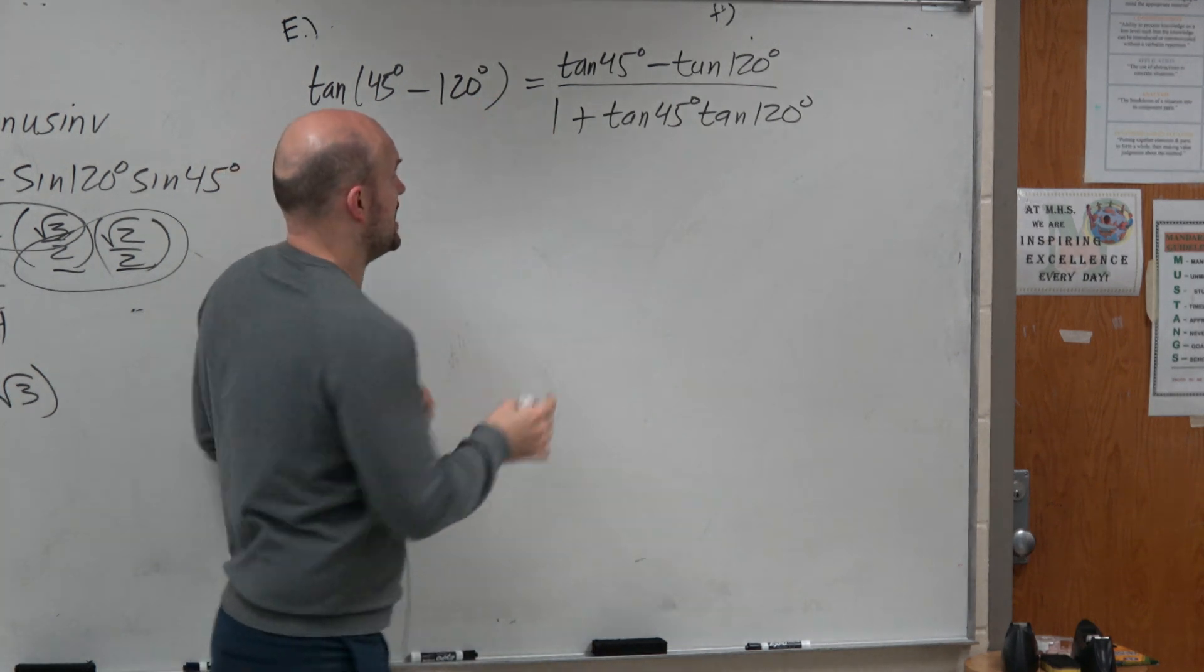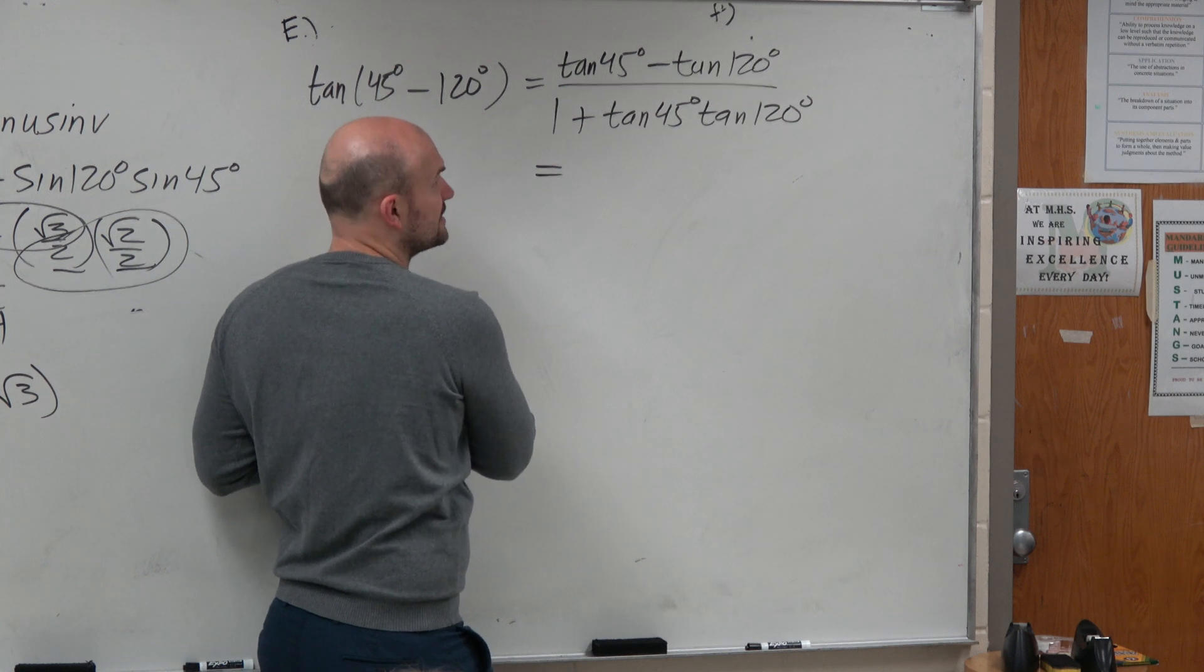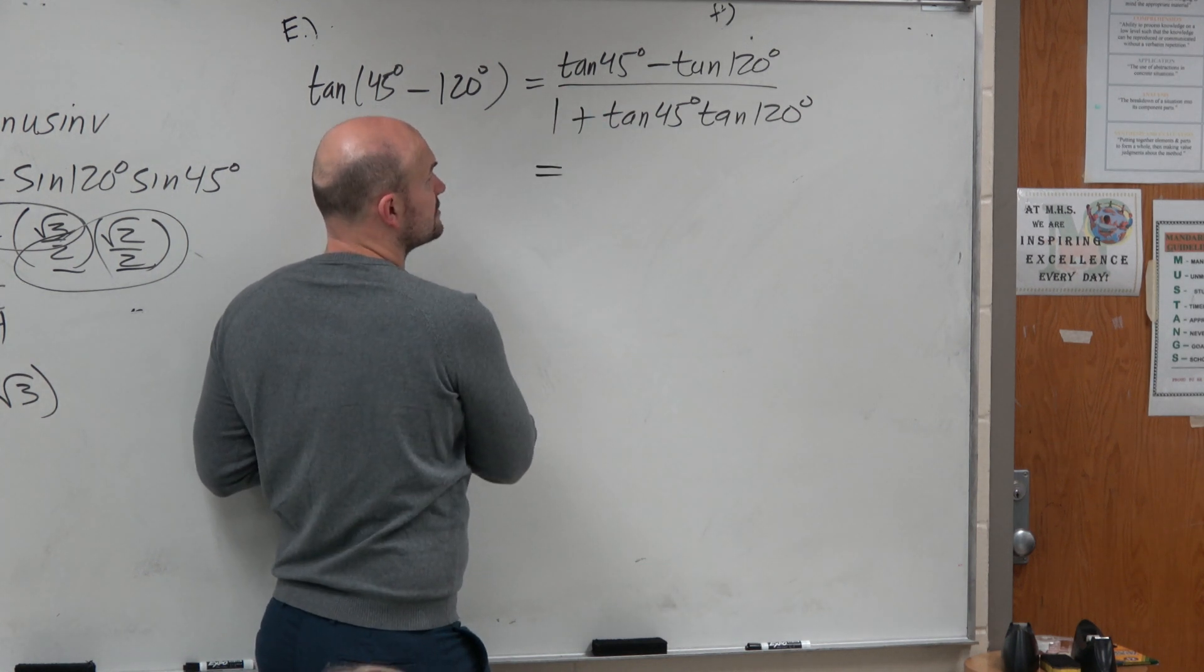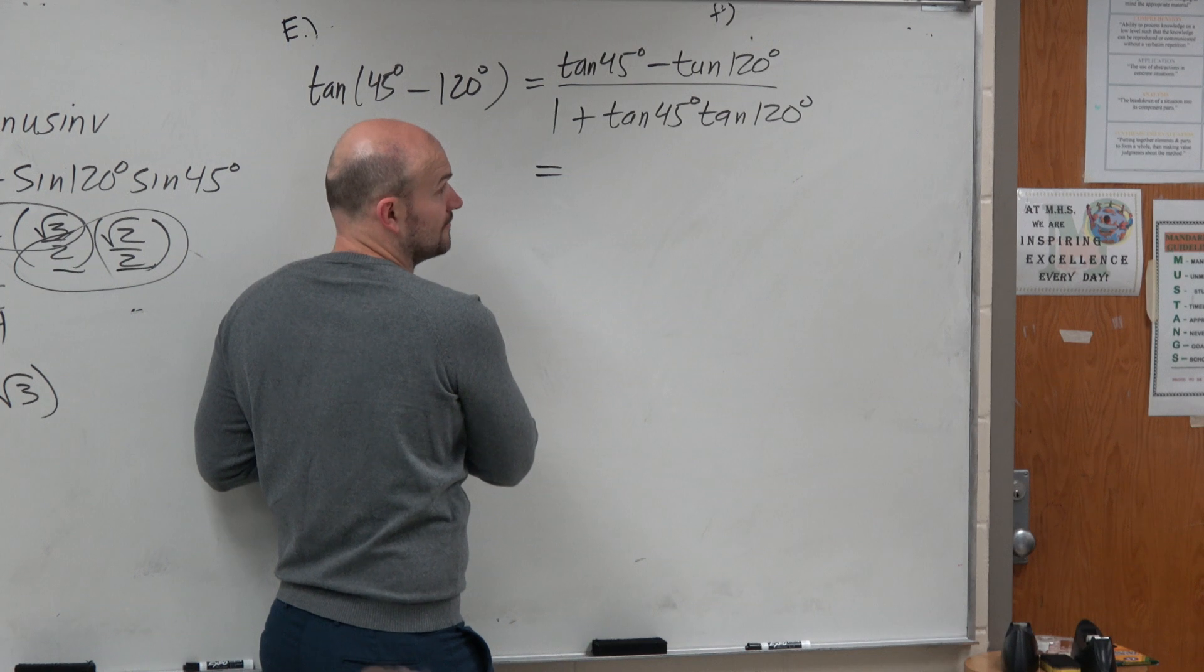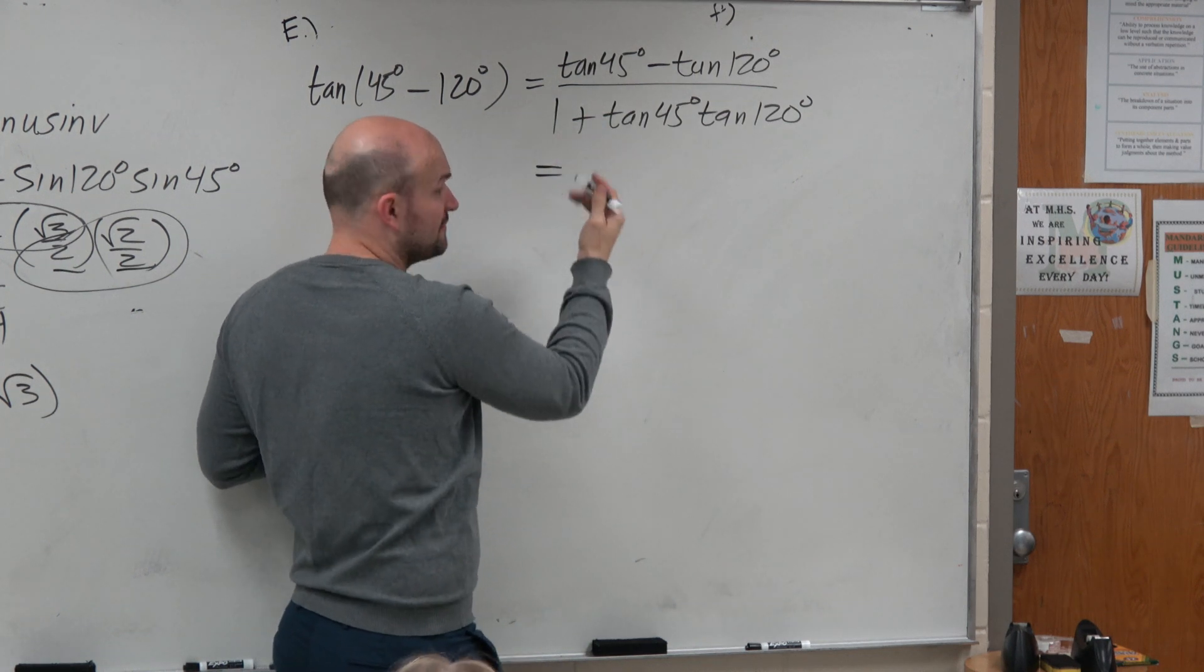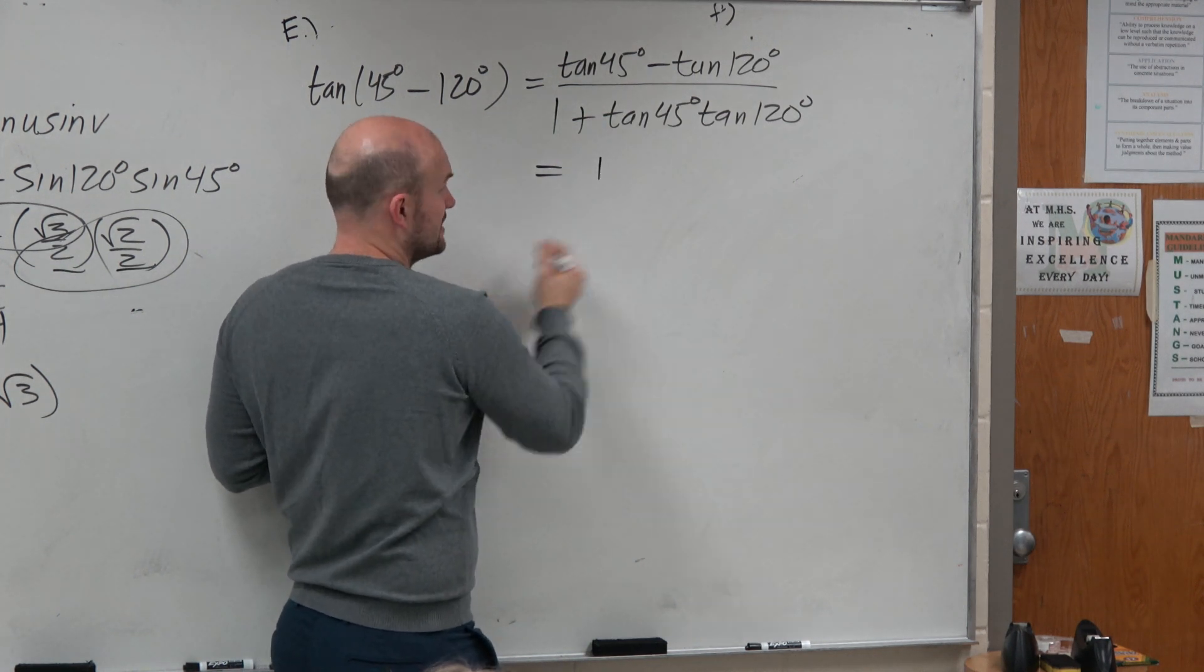All right, so now we're just going to evaluate. And actually, that's not too bad. We can do this one. So we have tangent of 45 degrees, which in this case is tangent. That's going to be the first quadrant. That's 1. That's kind of easy, right? We like that.